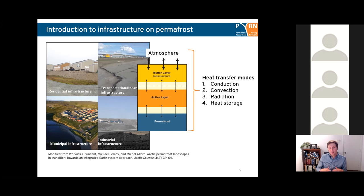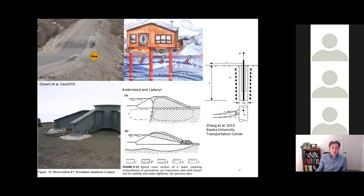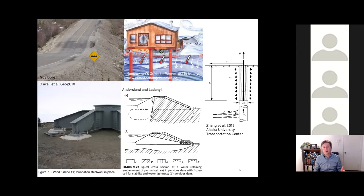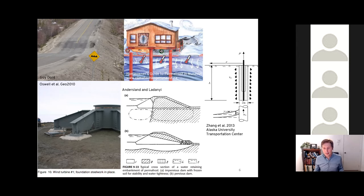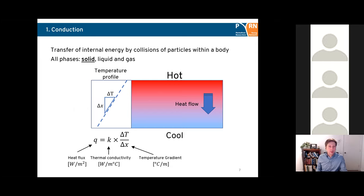When we talk about infrastructure on permafrost we can think of many things: road embankments, transportation embankments, housing units on piles or shallow foundations, shallow foundations for wind turbines, dams founded on permafrost or frozen core dams. On the far right you see a ground anchor, similar in principle to a pile in frozen soil. Now let's move into the heat transfer modes.